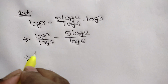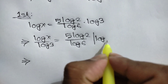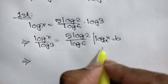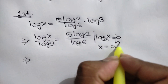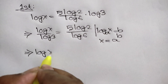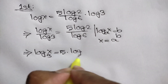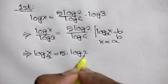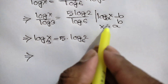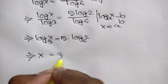We know that if log of x base a is equal to b, then x is equal to a to the power b. Now we can write log of x base 3 is equal to 5 times log of 2 base 6. Applying this rule, we get x is equal to 3 to the power 5 times log of 2 base 6.